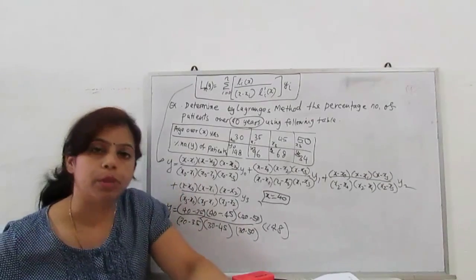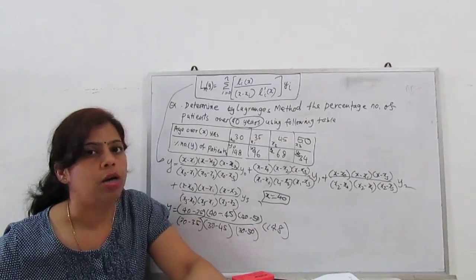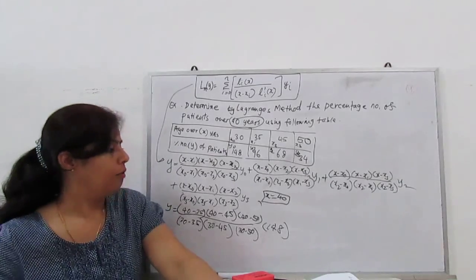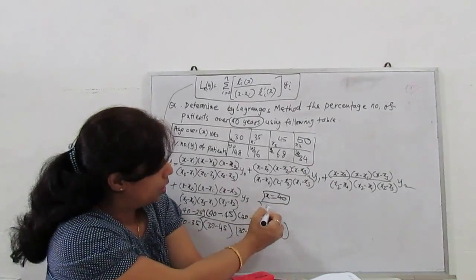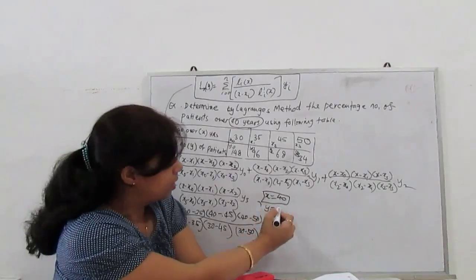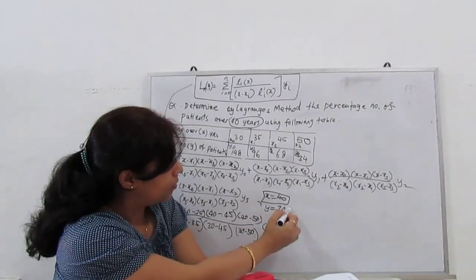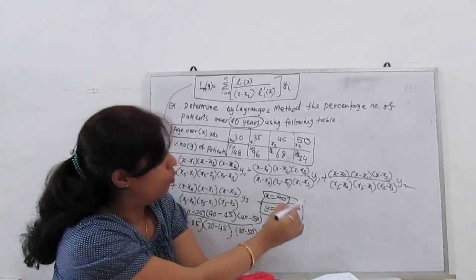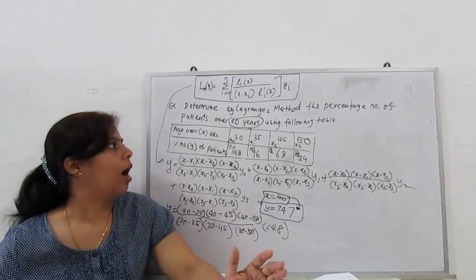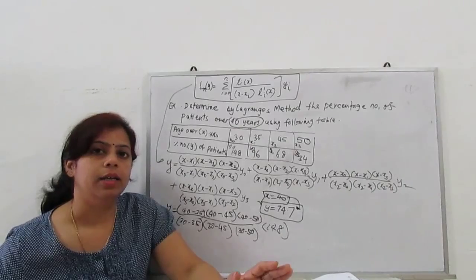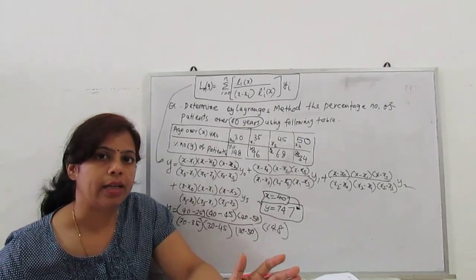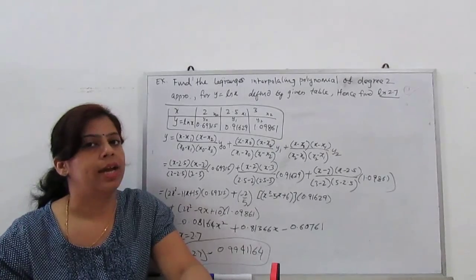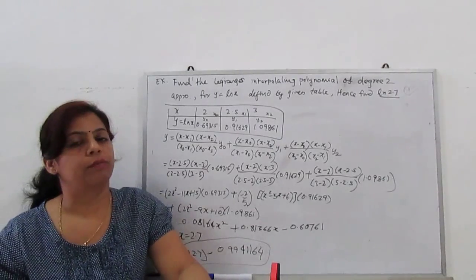Similarly substitute in second, third, and fourth terms. Calculate and simplify it, you will get y at 40 is 74.7. So final answer is 74.7.